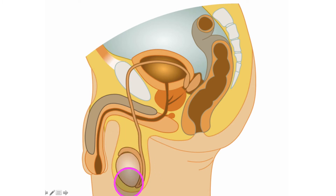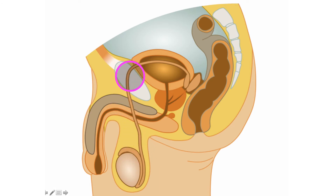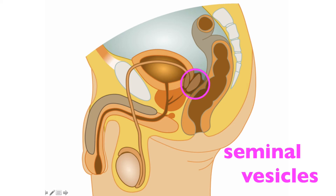During ejaculation, spermatozoa or sperm cells are going to leave the epididymis and travel up the ductus deferens to this region here, where fluid from the seminal vesicle — which is right here — provides nutrient-rich, fructose-rich secretions. Fructose is a type of sugar that is needed for the sperm cells' long journey.